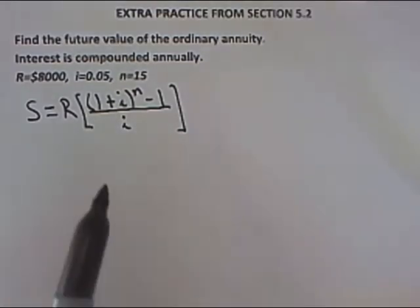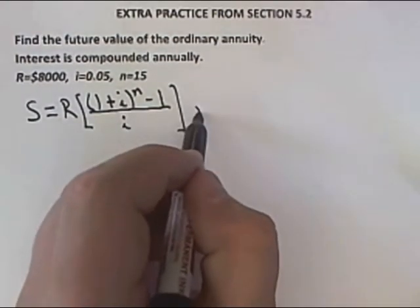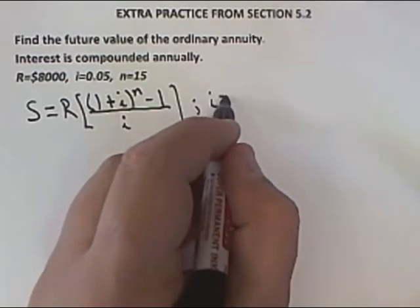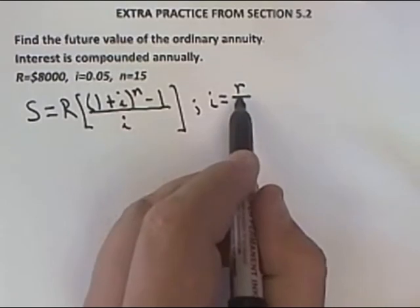Now here you're given directly i and n. Often you're not, so I'm going to make an aside which you really don't need now but in general you do. If you don't know what the interest rate per period is, you may have to calculate it based on being given the annual interest rate r and the number of compounding periods per year m.